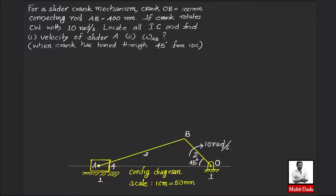Next we will apply the instantaneous center method. First, calculate the number of instantaneous centers. This slider crank mechanism is a 4-bar mechanism, and the number of instantaneous centers is given by n(n−1)/2, which equals 4×3/2 = 6. The number of links n is 4, so there are 6 instantaneous centers in total.